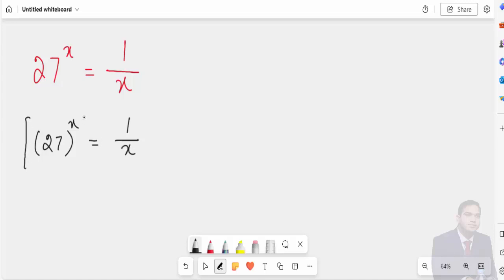Take 1 over x on both sides. 1 over x, 1 over x. Here this is cancelled. 27 is equal to 1 over x to the power 1 over x.